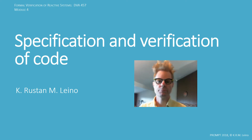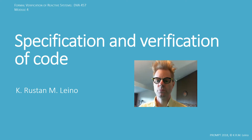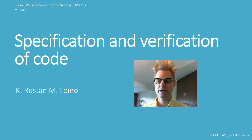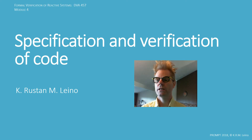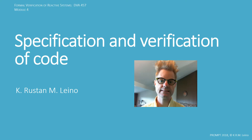Welcome back to module 4, the third lecture of this series on specification and verification of code. In the previous couple of lectures, we looked at pre- and post-conditions, and we looked at specifying invariants, and in particular loop invariants. Loop invariants are used not only to reason about the code in the first place and help you write it, but also to verify it — in fact, it's necessary to verify it.